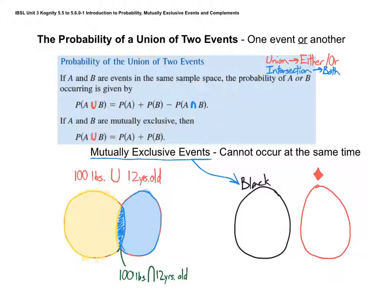That's what the second formula for mutually exclusive events is about. One thing to watch out for: if you forget to subtract the intersection, you can end up with a probability bigger than one. If you get something like a 115% probability, that should set off alarm bells that something is wrong, and hopefully that will help you catch your mistake.